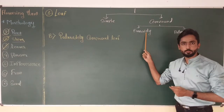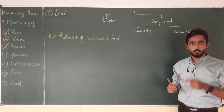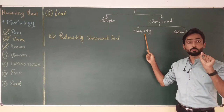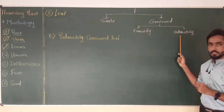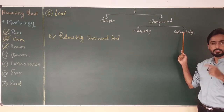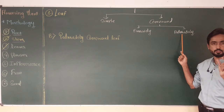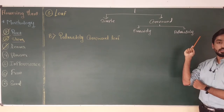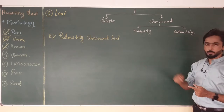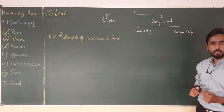In a pinnately compound leaf, only a single mid-rib is present and incisions occur so that the leaf gets divided into a number of small segments called pinnae. But in the palmately compound leaf, multiple mid-ribs are present and the small segments produced are called leaflets. So pinnae are present in pinnately compound leaf and leaflets are present in palmately compound leaf.